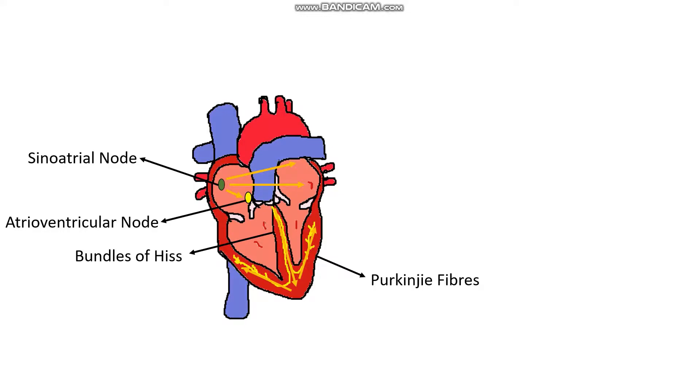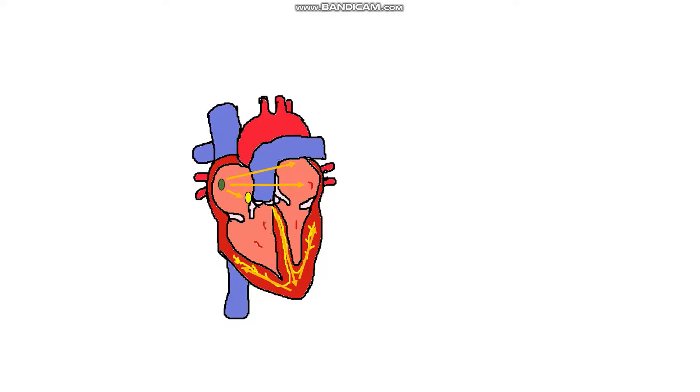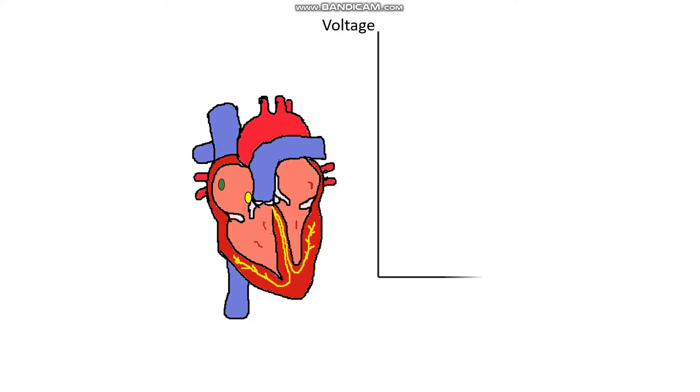We can detect these waves of depolarisation by placing electrodes all over the body. These electrodes will detect electricity either coming towards them or going away from them, and what they actually detect we can plot on a graph which reads voltage against time.